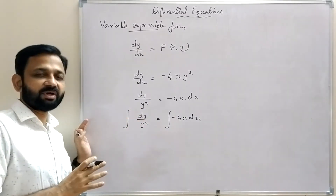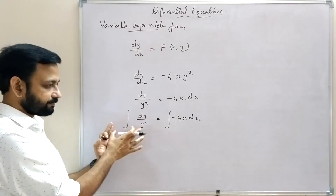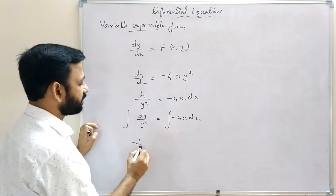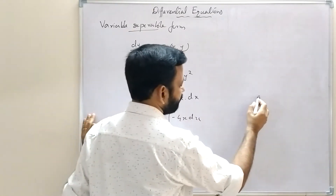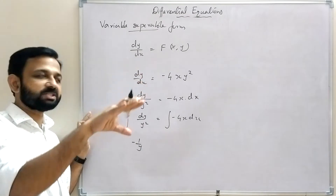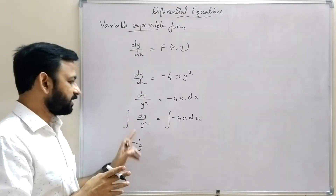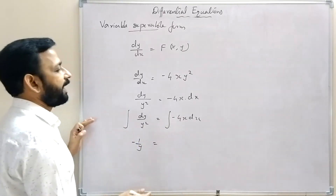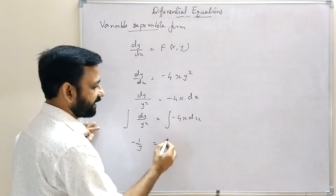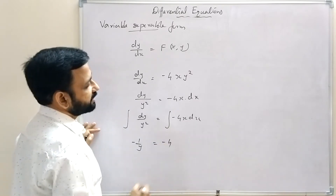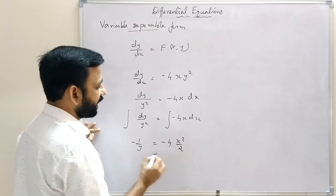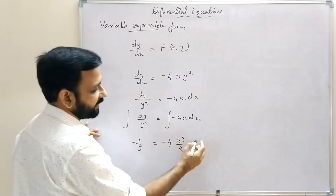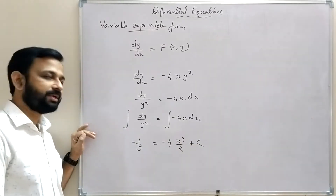Integral of 1/y² is -1/y, since d/dx(1/x) = -1/x². On the right side, taking -4 outside, integral of x dx is x²/2. The two constants of integration can be combined into one constant c.